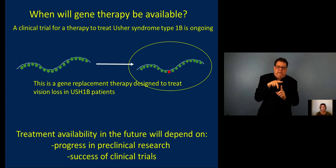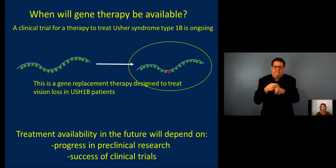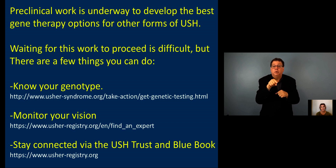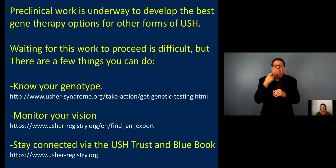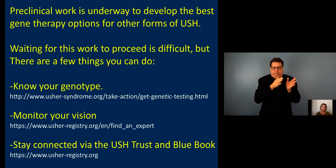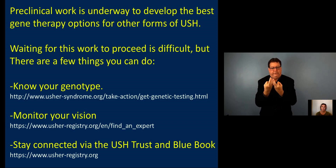A lot of good people are working on it and there are good reasons to remain hopeful. I know that the waiting is really hard even as this work is underway. So there are a few things you can do while you wait to make sure you're in the best possible position when a gene therapy does become available. First, know your genotype. Second, continue to monitor your condition, especially your vision. And finally, stay connected with the Usher family through the Usher Trust and the Blue Book so that you'll be the first to know when something comes your way that might be effective.